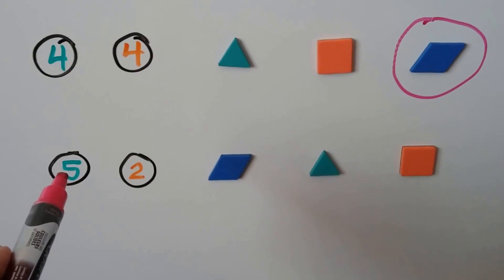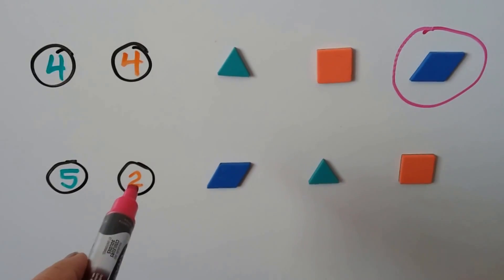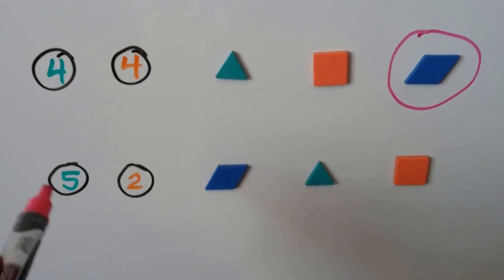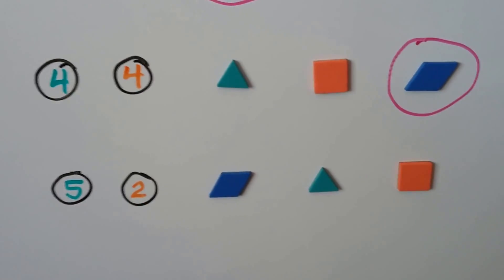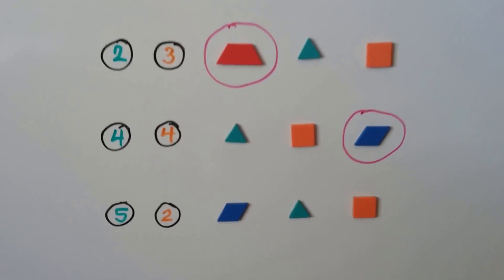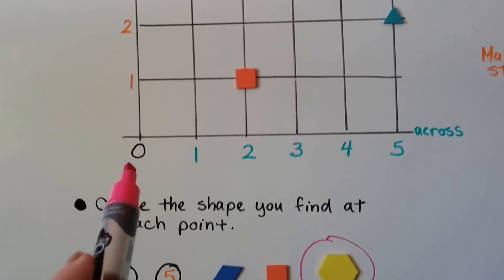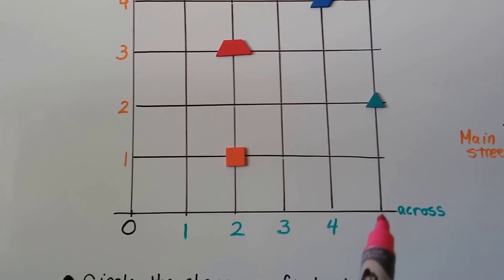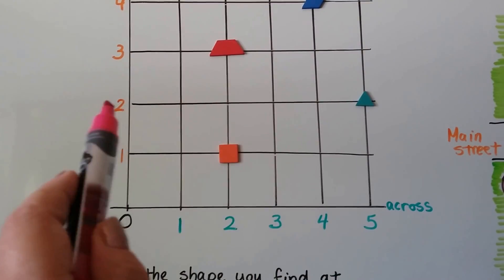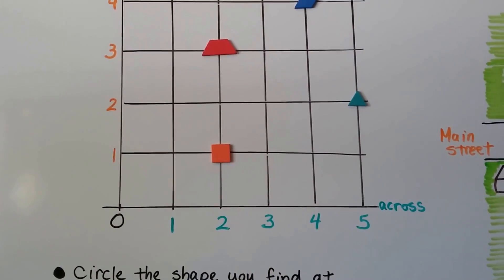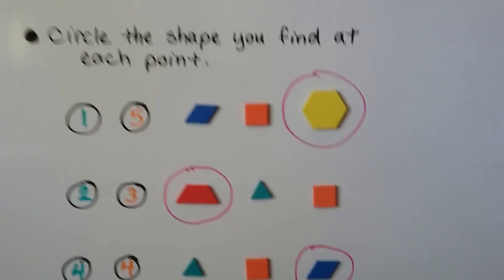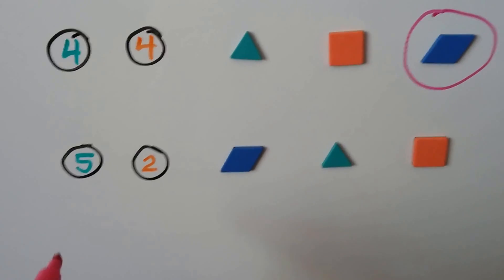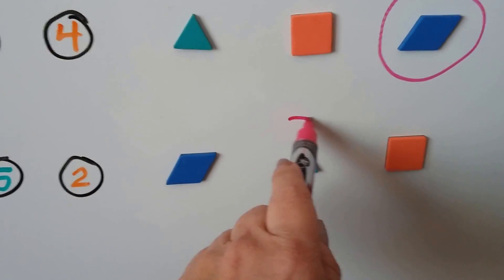We have a green 5 and an orange 2. Which one of these shapes is at the green 5 and orange 2 intersection where they crisscross? Let's find the green 5, here it is. Where is the orange 2? We go up to the line where the 2 is. We see that it's a green triangle. Which shape is at that point? It's the green triangle.